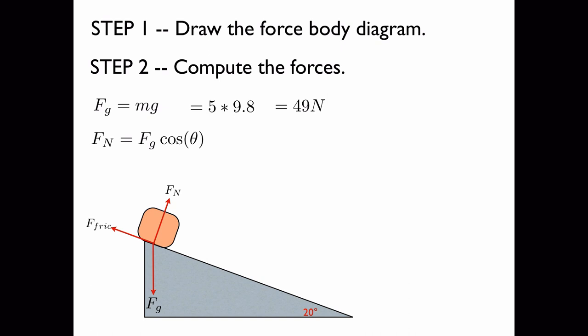Now the normal force is given by the product of the gravitational force and the cosine of the angle. This is a formula you can find in your physics textbook. When we plug in the information, we get 46 newtons.